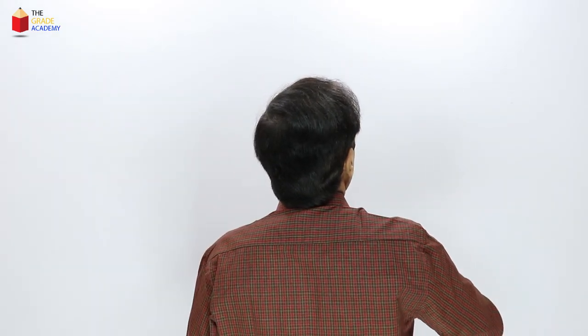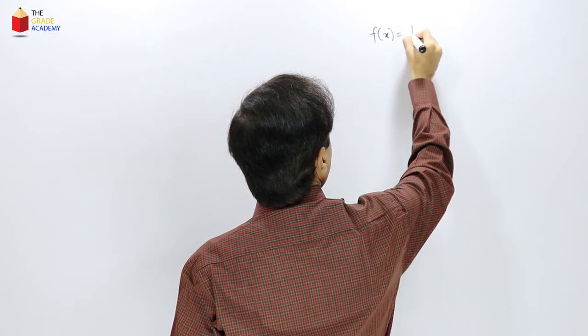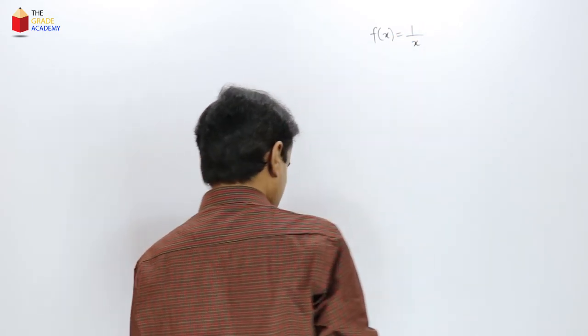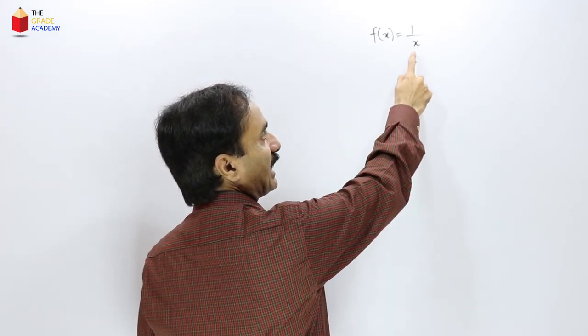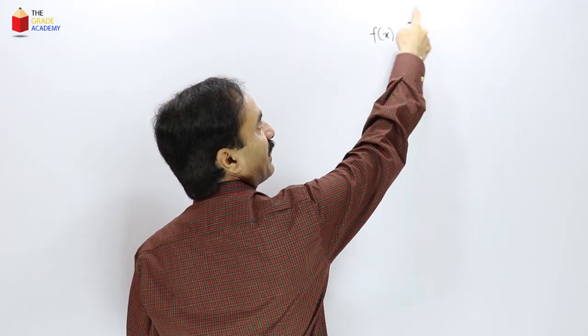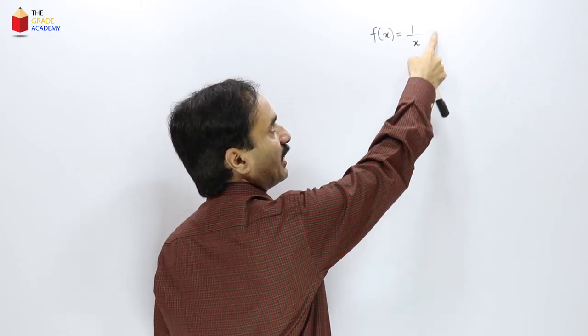The limit of a function basically shows the behavior of the function as the independent variable approaches a certain value or infinity. For example, if we consider the function f(x) = 1/x, as the values of x get bigger and bigger, this function gets smaller and smaller. So we can say that as x approaches infinity, this function approaches 0.